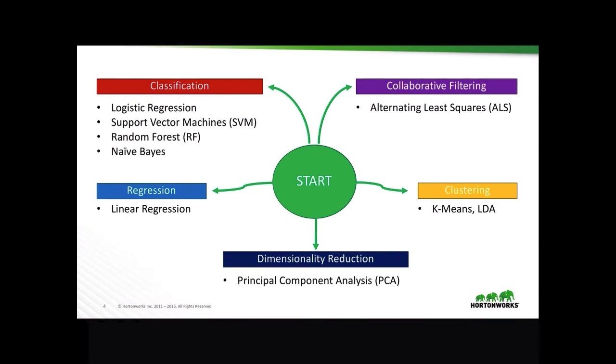Here's a sample of machine learning algorithms that you can start with, depending on what you're trying to achieve. For example, classification, or identifying to which of a set of categories a new observation belongs to. You have several options: logistic regression, support vector machines, by some claim to be the most powerful algorithms, random forest and naive Bayes.